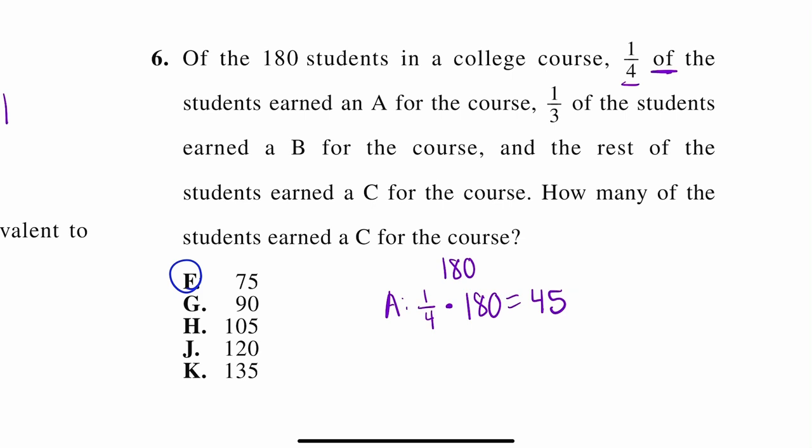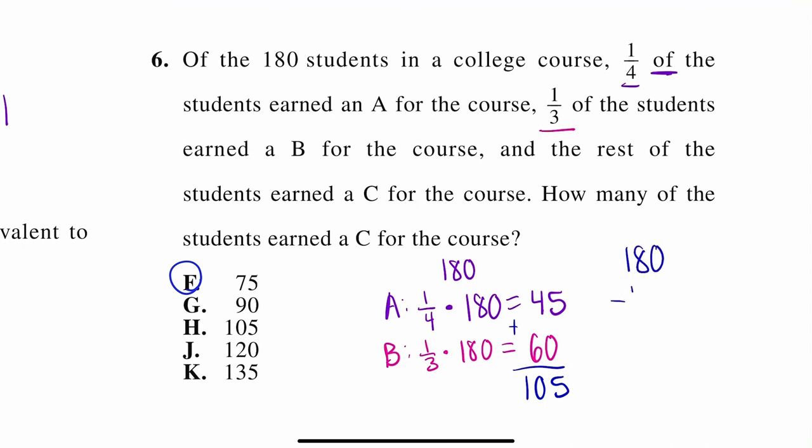Now, let's look at the B. It says a third, one-third of the students. So, a third of 180 got a B. So, 180 divided by your 3, or times one-third, is going to be 60. So, we want to know the rest got a C. So, let's add these two up. We have 60 plus 45. That gets us 105. So, 105 got A's and B's. So, we need to subtract those from the total amount of students, which is 180. So, 180 minus 105 is 75 students, which is our first answer.